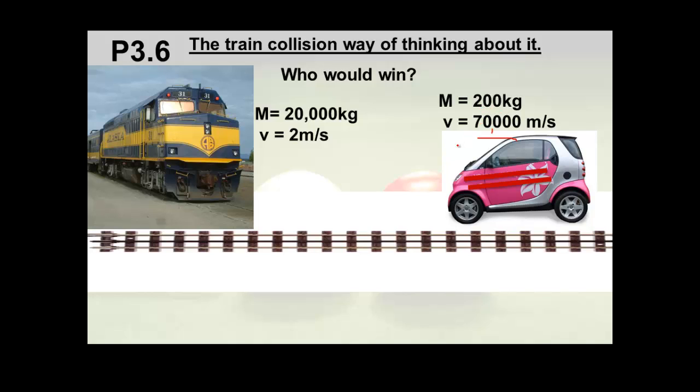Now if I work it out, okay this is going to be real big. So it's 2 times 7 is 14, then you just plug in all the zeros. There's two zeros there, and then four of these. Oh god, so 14 million kilograms meters per second. And this guy only had I think 40,000, didn't he?